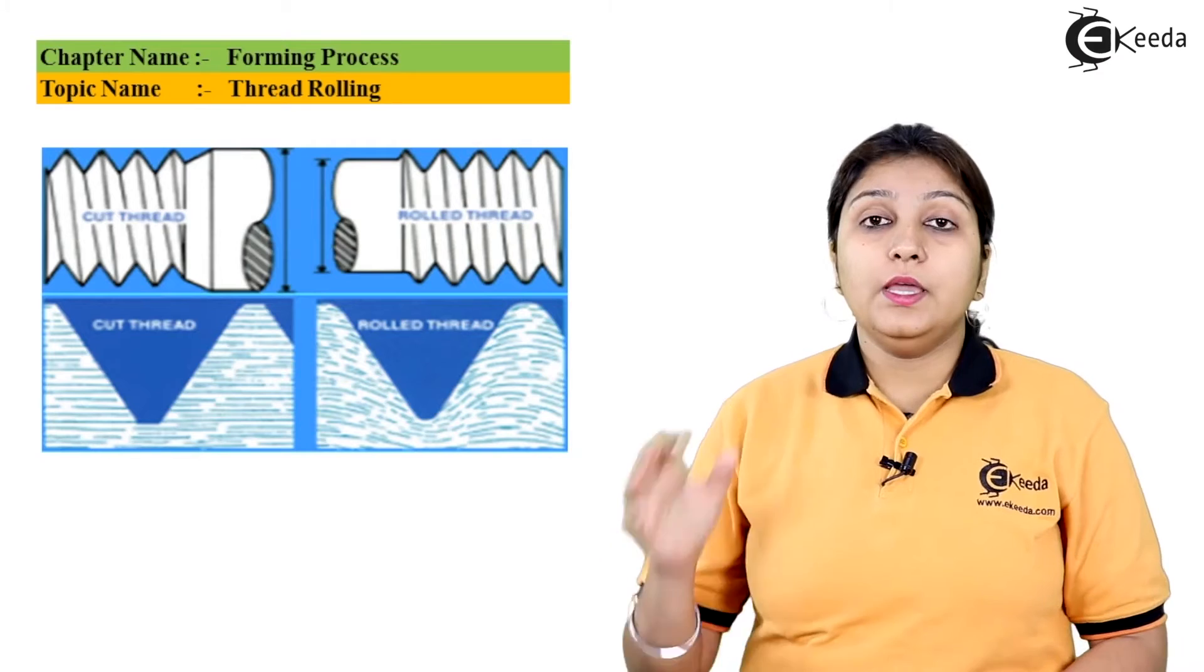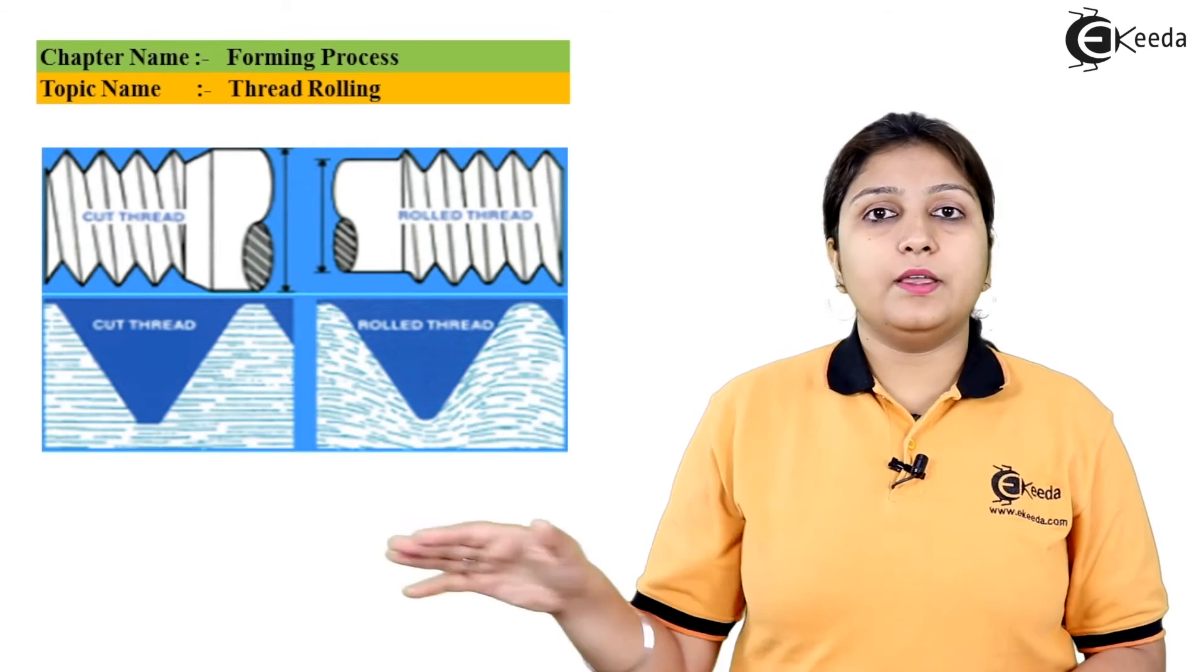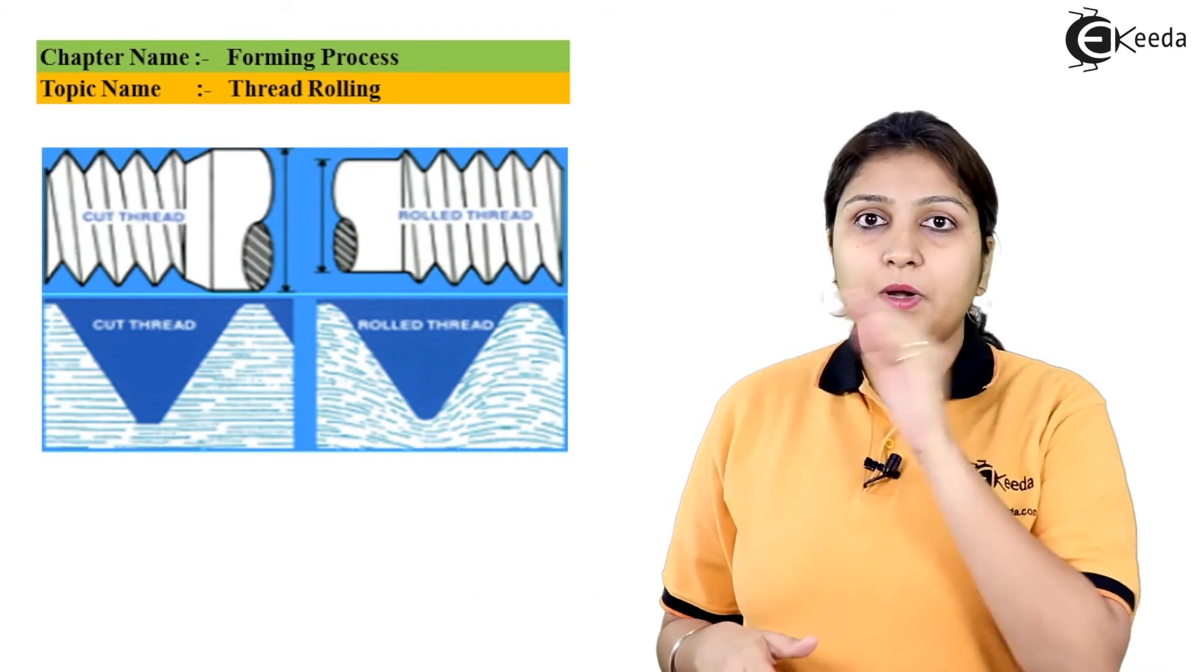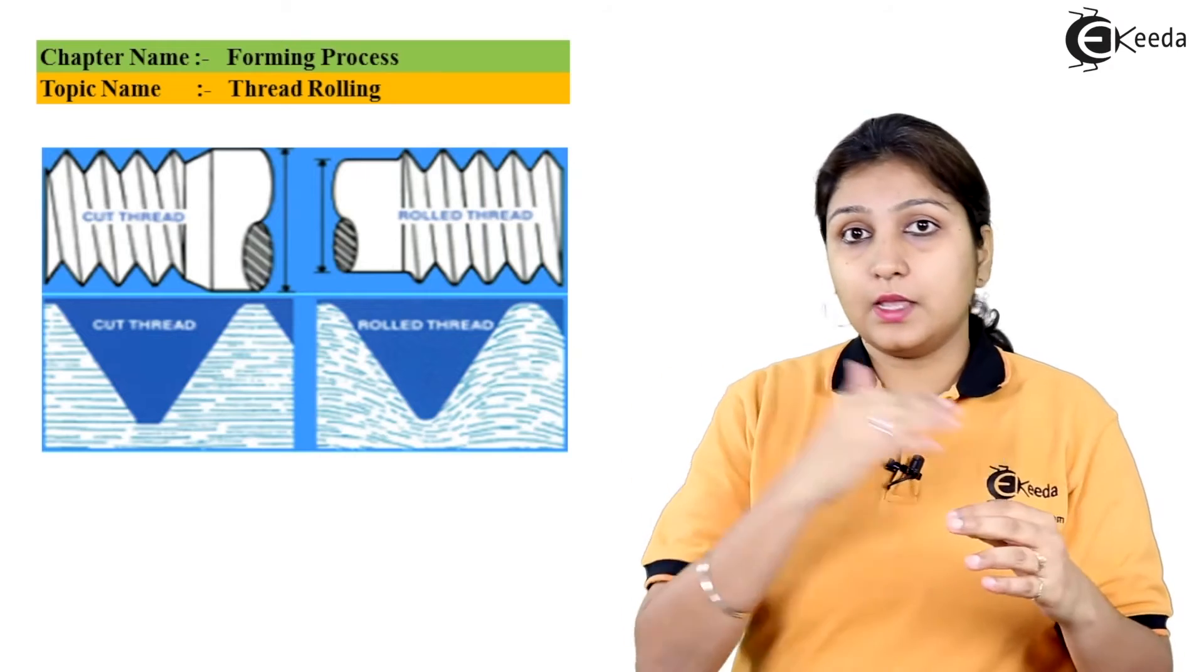So basically when we talk about thread rolling, in a single pass, threading is done. Your material is going between the threaded dies in a single pass.